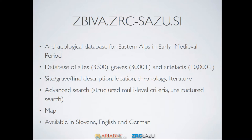It has advanced search capabilities. Advanced nowadays can mean many things — this is not so advanced. It just means that it offers structured multi-level portfolio search and also unstructured search. It also has a map and is available in several languages. Its main focus is actually on literature, so it's a place where you start your research. It's also available in English and has been developed since 1987.